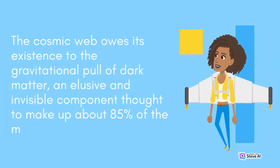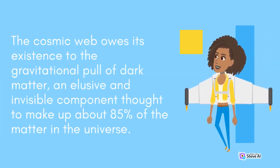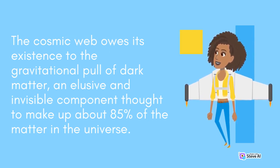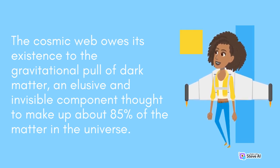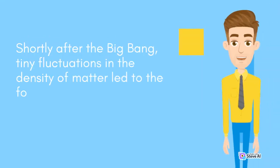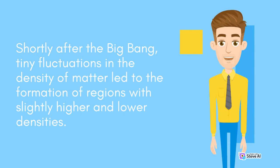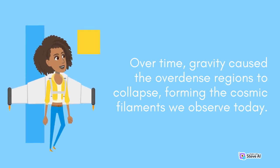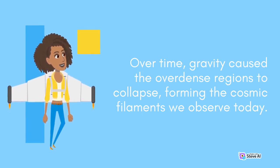The Cosmic Web owes its existence to the gravitational pull of dark matter, an elusive and invisible component thought to make up about 85% of the matter in the universe. Shortly after the Big Bang, tiny fluctuations in the density of matter led to the formation of regions with slightly higher and lower densities. Over time, gravity caused the overdense regions to collapse, forming the cosmic filaments we observe today.